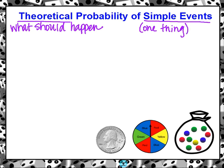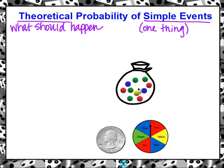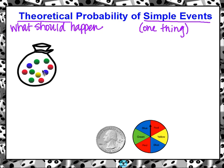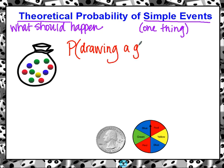Let's start with the bag of marbles. We have a bag of marbles, and let's say we want to draw a green marble. So we want the probability of drawing a green marble.